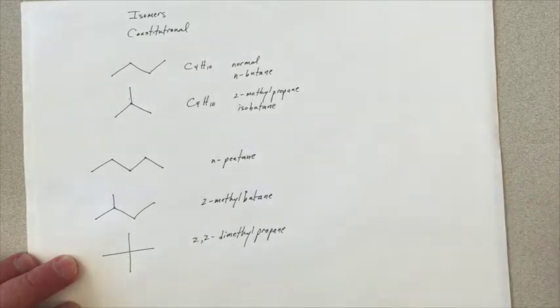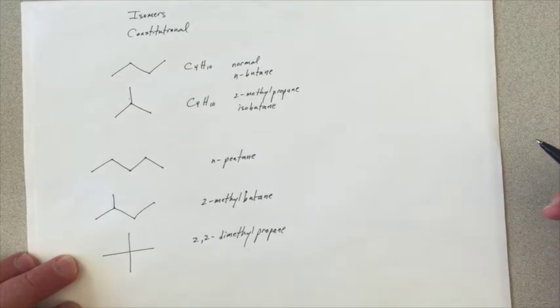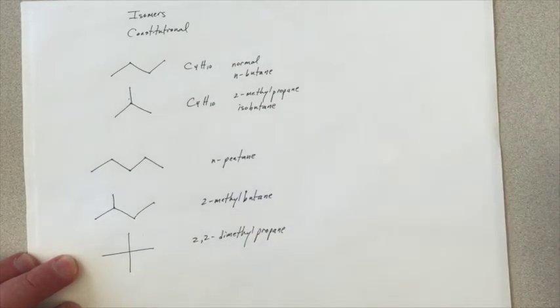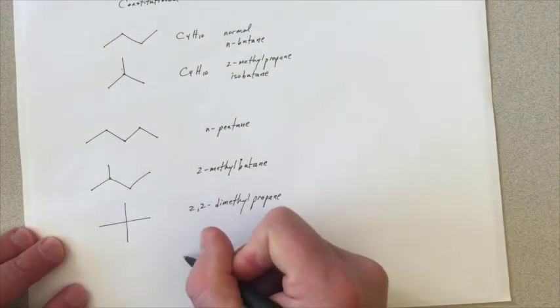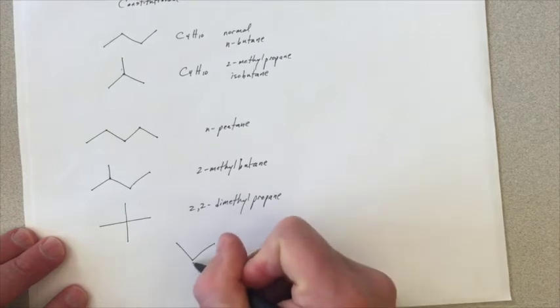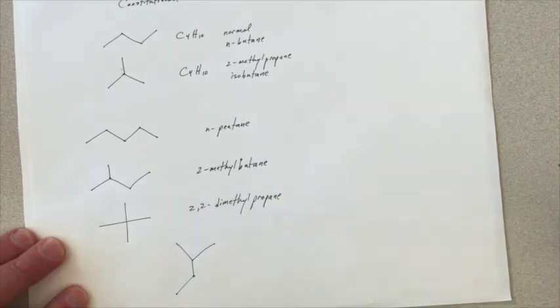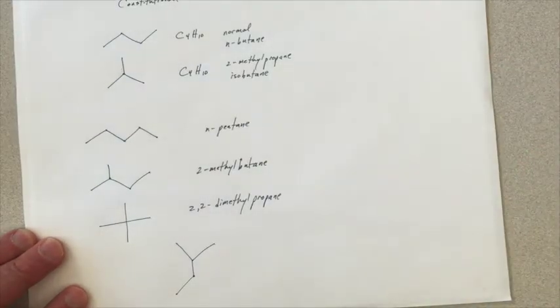Now, sometimes it can get confusing when you start adding branches to figure out whether you've determined another constitutional isomer or you're just representing one that is already there in a different way. Let me give you an example of that. I've got five carbons in this molecule. And the question is, is this a new constitutional isomer? Is it something different? Or is it something that we've already put up here?